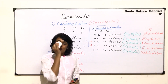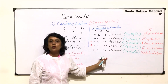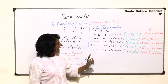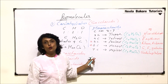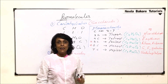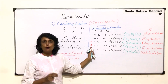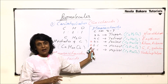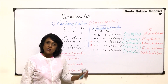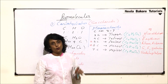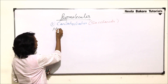For heptose, one example is sedoheptulose, a seven-carbon sugar. Depending upon the number of carbons, we can divide monosaccharides from triose up to heptose sugars. We will discuss hexose and pentose sugars in detail, starting with the six-carbon sugar glucose since we are already familiar with it.